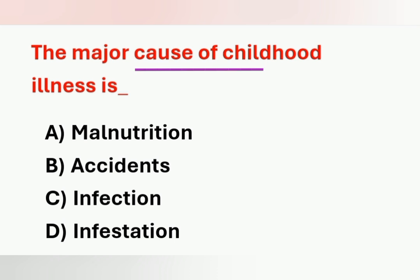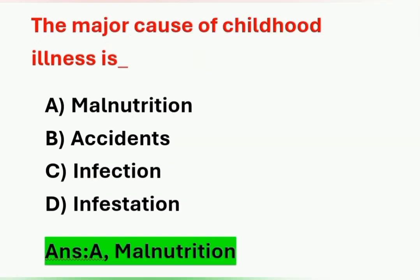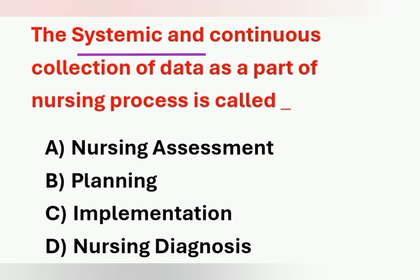Next question: the major cause of childhood illness is which option? Option A – malnutrition. Option B – accidents. Option C – infection. Option D – infestation. One of the major causes of childhood illness is malnutrition. Option A is the correct answer.